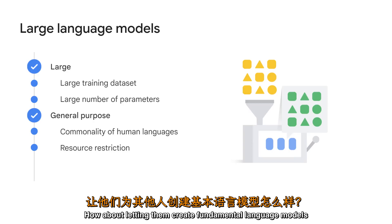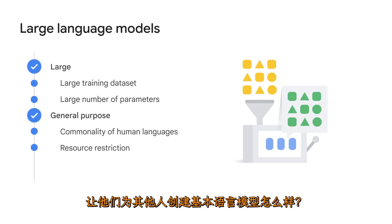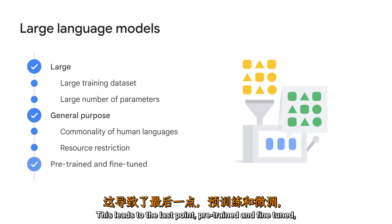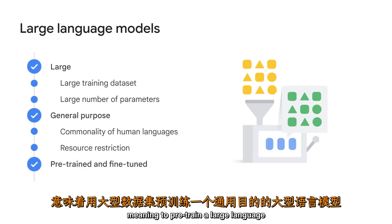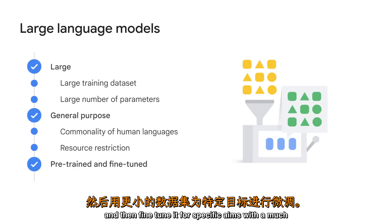General purpose means that the models are sufficient to solve common problems. Two reasons lead to this idea: first is the commonality of human language regardless of the specific tasks, and second is the resource restriction. Only certain organizations have the capability to train such large language models. This leads to the concept of pre-trained and fine-tuned — pre-training for general purposes with a large dataset, then fine-tuning for specific aims with a much smaller dataset.